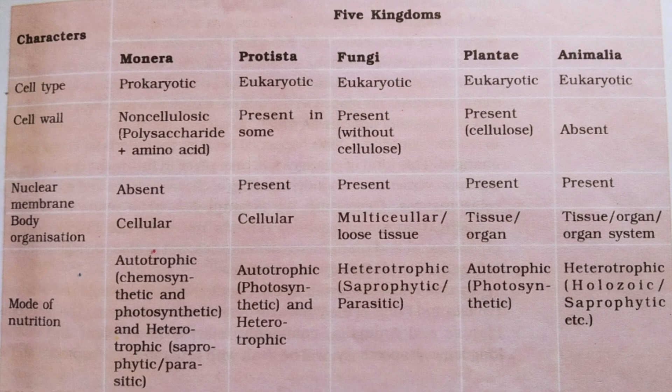In summary, Kingdom Monera are prokaryotes while Protista, Fungi, Plantae, and Animalia are eukaryotes. Regarding cell wall: Monerans have a non-cellulosic cell wall made up of polysaccharides and amino acids; in Protists, cell wall may be present in some; in Fungi, cell wall is present but without cellulose; plants have a cellulosic cell wall; and in animals, cell wall is absent.